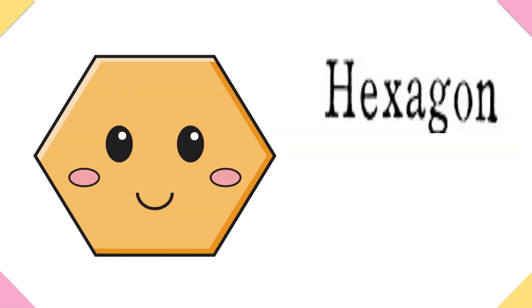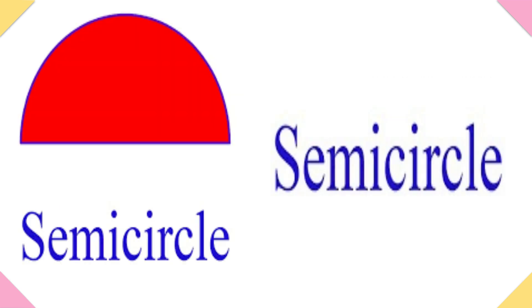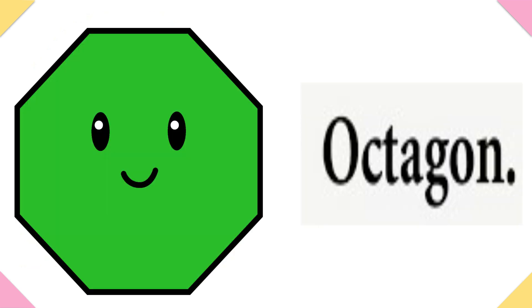I am a hexagon. I have 6 sides and 6 corners. I am a semicircle. I have 1 side and 2 corners. I am an octagon. I have 8 sides and 8 corners.